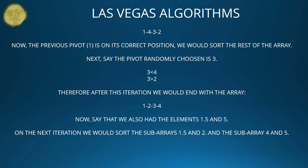Next, say the pivot randomly chosen is 3. We compare it to the variable 4 and the variable 2. Since 4 is more than 3 and 2 is lesser than 3, after this iteration we end with the array [1, 2, 3, 4], which is sorted. That means the algorithm has finished its work.